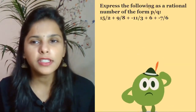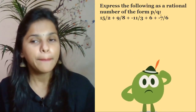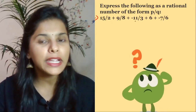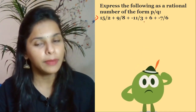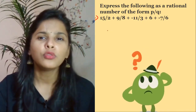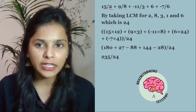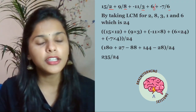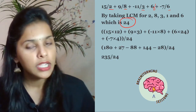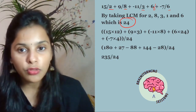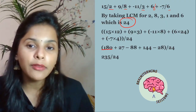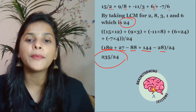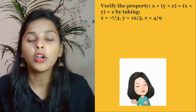Next question: express the following as a rational number of the form P/Q. The expression is 15/2 + 9/8 + (−11/3) + 6 + (−7/6). Take the LCM of denominators 2, 8, 3, 1, and 6, which gives 24. Convert all numerators accordingly — you get 180, 27, −88, 144, −28. Solving all these gives 235/24.